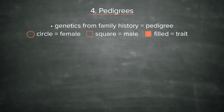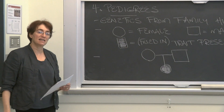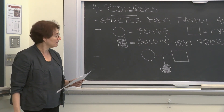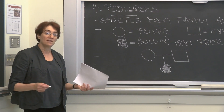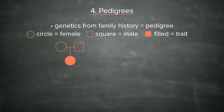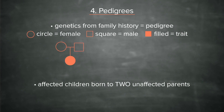For example, you might have a mating between a male and a female — the line indicates that there's a mating — and the offspring, shown here as a female, might have the particular trait you're interested in. In this case, we can say something about the genetics of this trait. This is an affected child — they have the trait — born to two unaffected parents. And this is always a hallmark of a recessive trait: an affected offspring born to two unaffected parents is characteristic of a recessive trait.